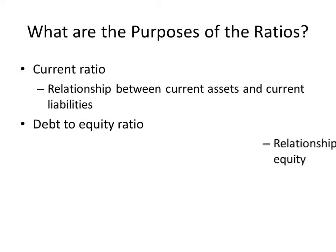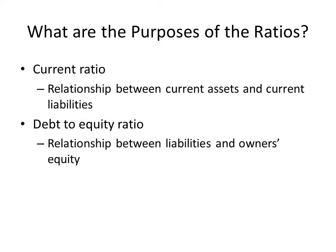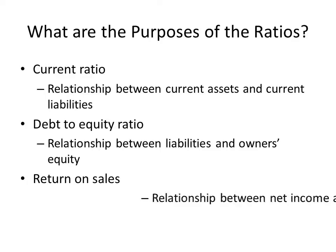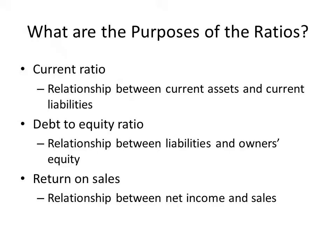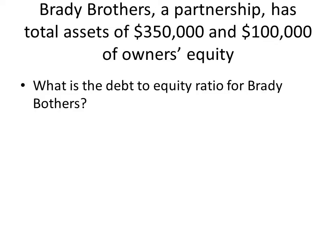Next is our debt to equity ratio. Our debt to equity ratio is the relationship between liabilities and owner's equity — how heavily weighted in debt are our assets for this company? Return on sales is our next one. That's the relationship between net income and sales — in other words, what money do we have left over to cover other costs and towards net income?